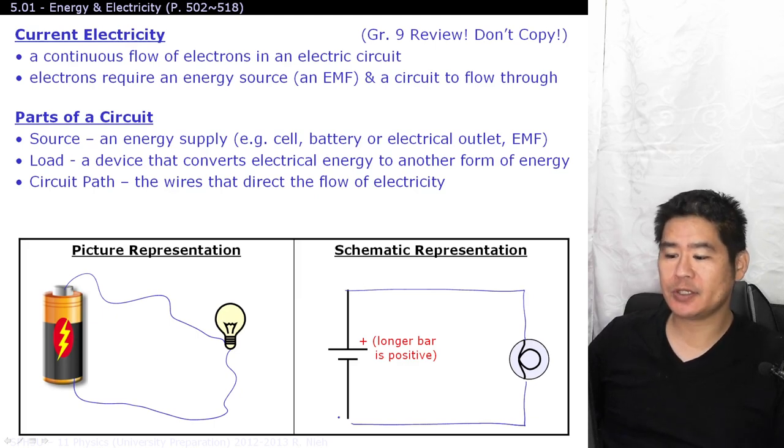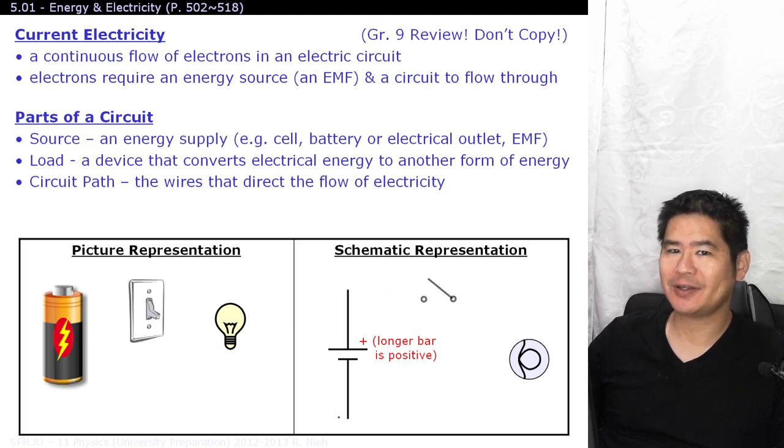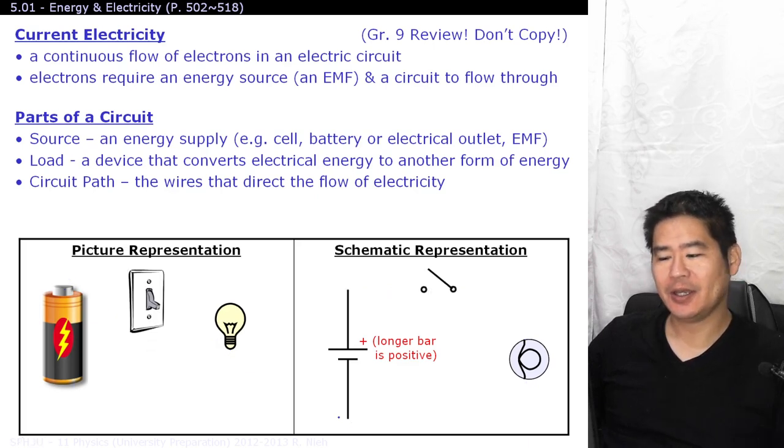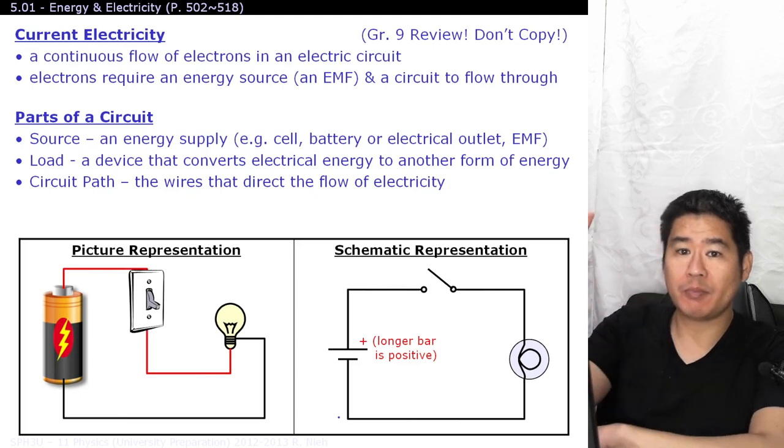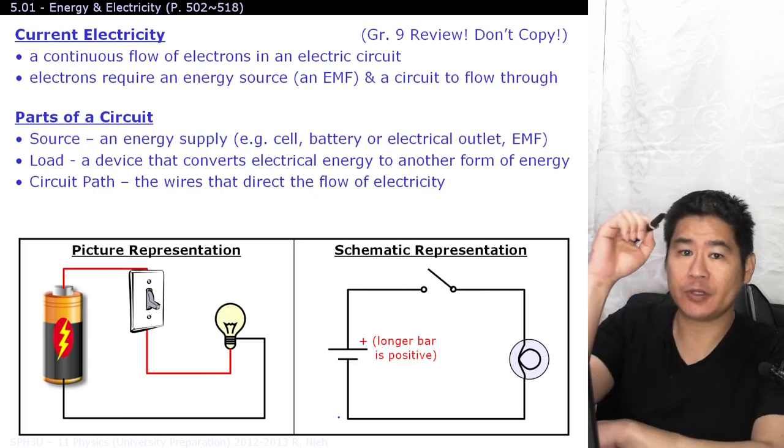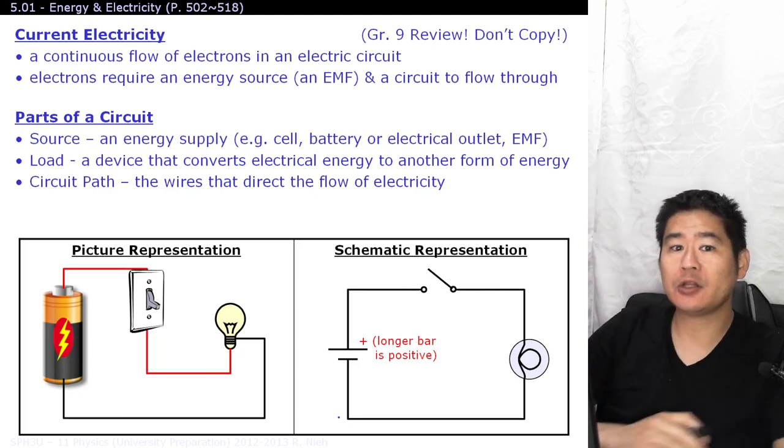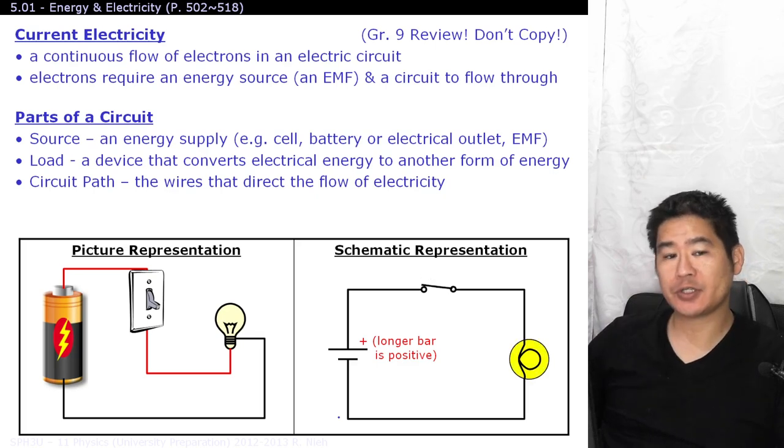Normally you don't hook up circuits like this. We usually have something that interrupts the flow of current, known as a switch. And now we can hook up the entire circuit. In the current state, the light bulb will not light up because the switch is opened. There's not a complete loop for the electrons to flow through. You need to close the switch in order for electricity to flow.